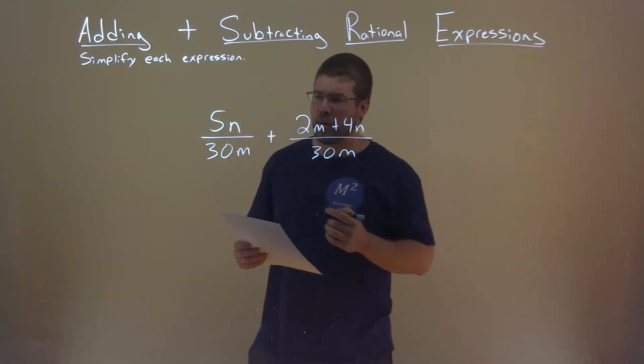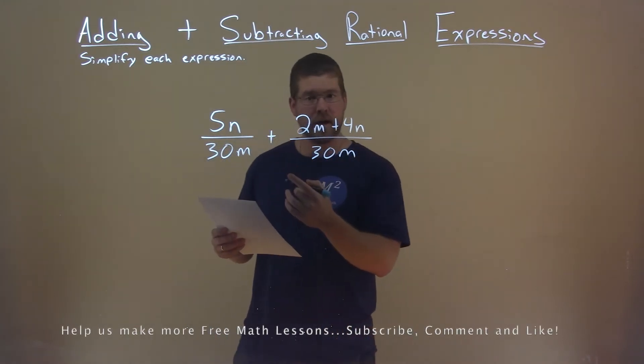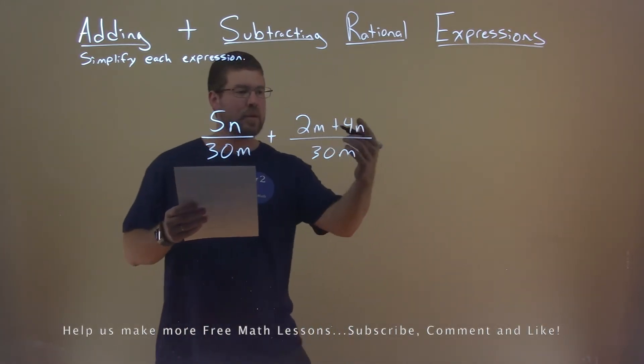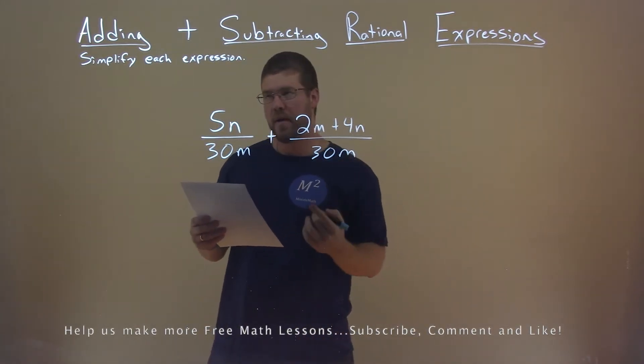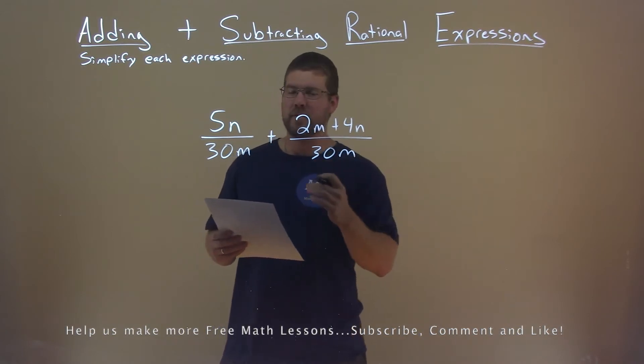We're given this problem right here: 5n divided by 30m plus 2m plus 4n divided by 30m, and we need to simplify this expression.